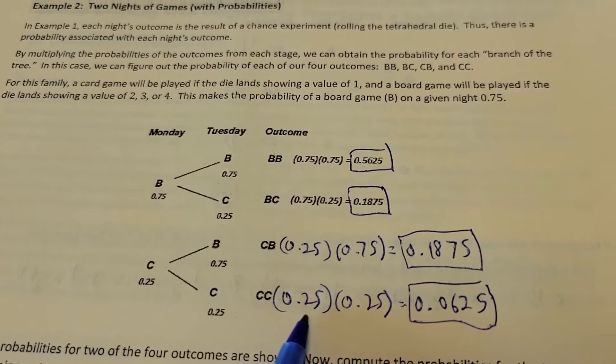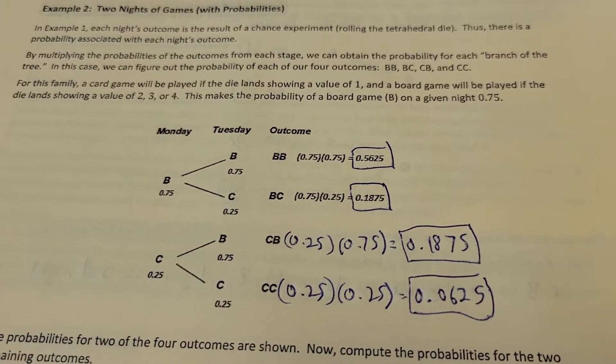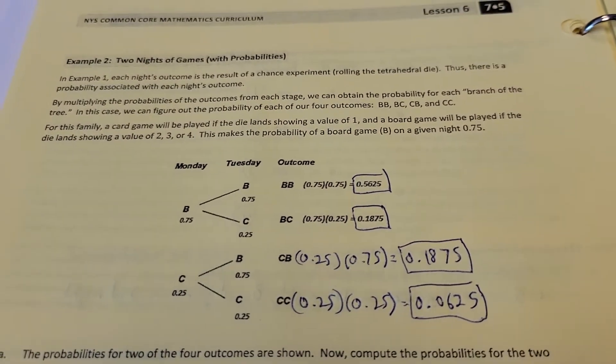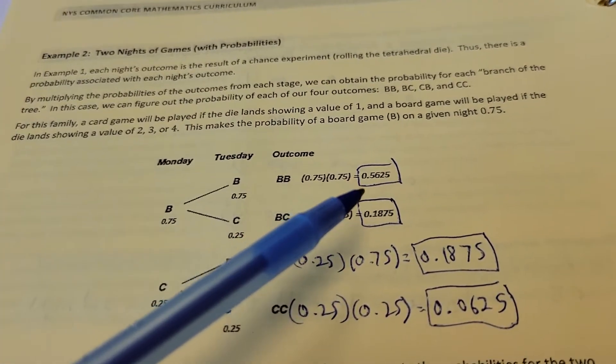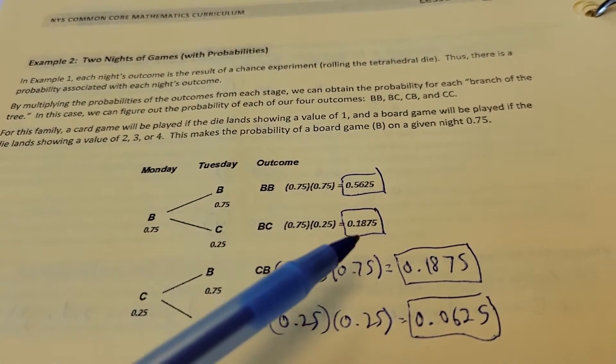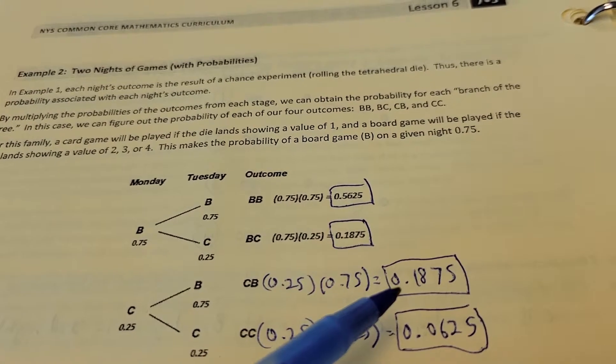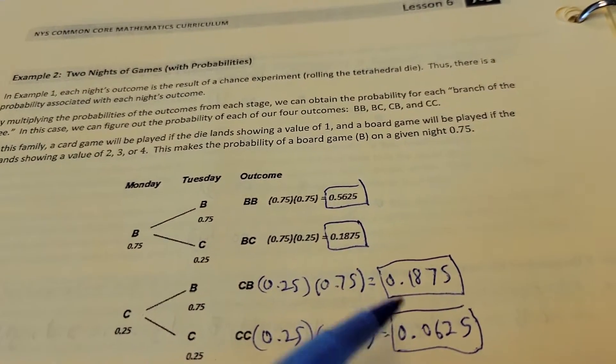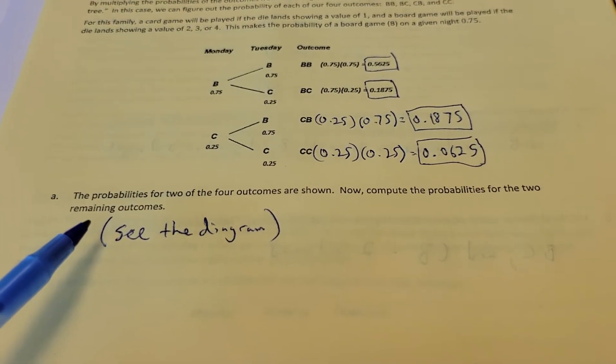What's the chances of getting a card game on both nights? Card game, card game. Take 0.25 times 0.25, and you get 0.0625. So as far as the percents go, you've got about a 56% chance of that happening, almost a 19% chance, almost a 19% chance, and a little over 6% chance of that happening.